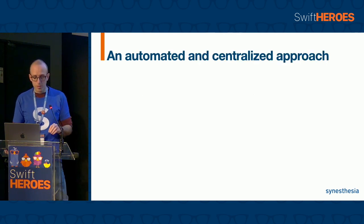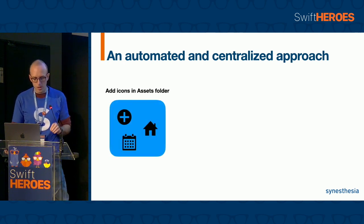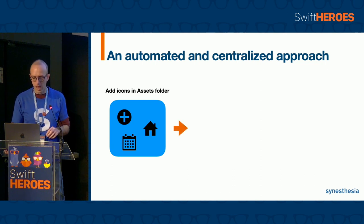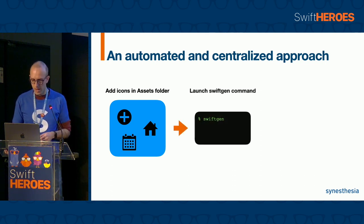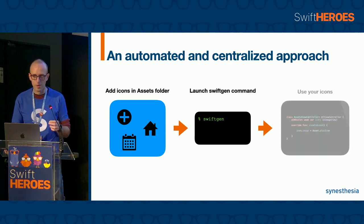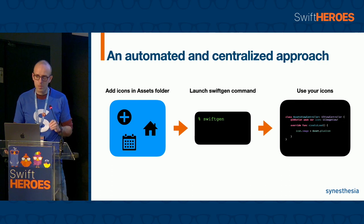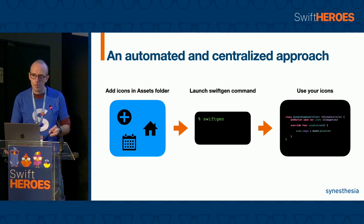The asset enumeration is automatically generated in the file declared in the configuration file. Thanks to property wrappers and SwiftGen, we now have an automated and centralized approach. We only have to add icons in our Xcode assets folder, then launch the SwiftGen command, and we can start to use our resources wherever we want. This asset management can be very useful, especially at the beginning of a new project when you have to import a lot of resources.